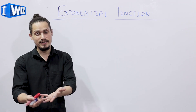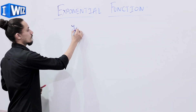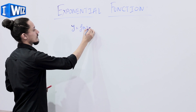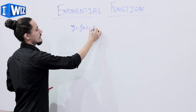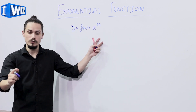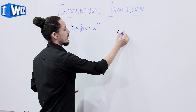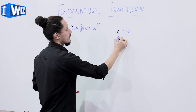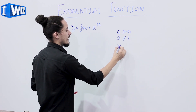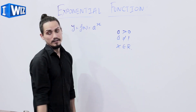What is an exponential function? A function of the form y = f(x) = a raised to power x is called an exponential function, if the value of a is always greater than zero, a is not equal to one, and x belongs to the set of real numbers.